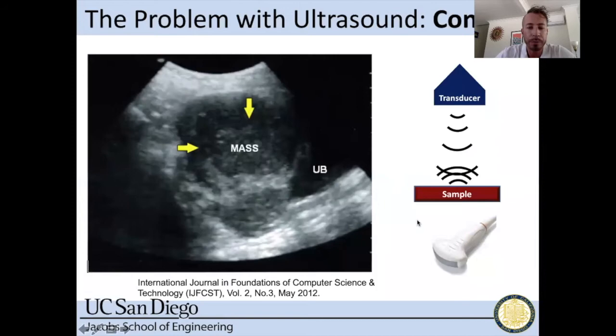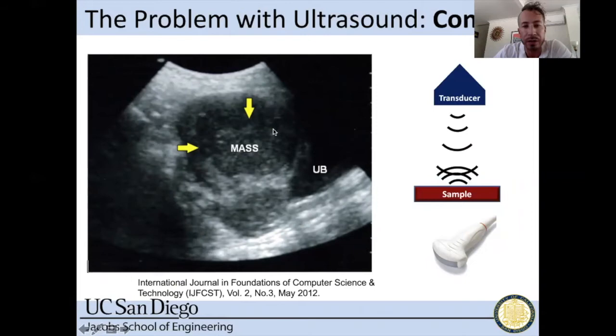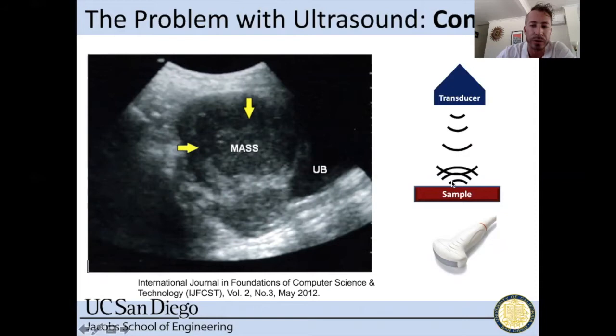Photoacoustic imaging works to improve contrast in ultrasound. This is an ultrasound image of a mass on the ovary — UB here is the urinary bladder. A trained radiologist might identify this as a mass, but you can also appreciate that there is relatively low contrast between this mass and the adjacent healthy tissue. These images were collected with conventional pulse-echo ultrasound, where a transducer emits and receives pressure waves that bounce off the sample.